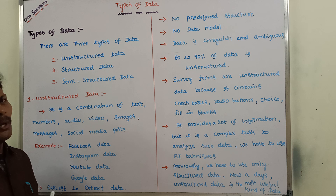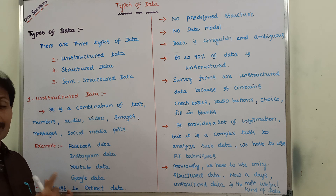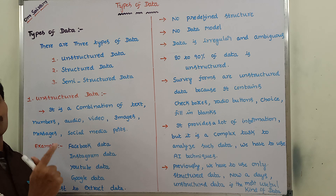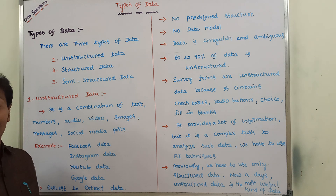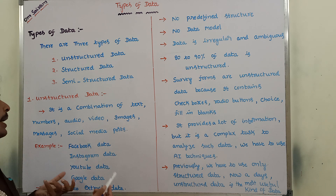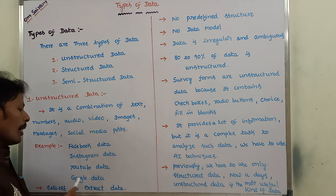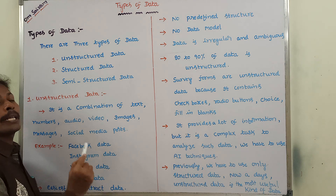We can see that in Facebook, some images are there, some video files are there, some audio files are there, some text data is there, some social media posts are there, some numbers are there. Because of that reason, we can say that Facebook data is unstructured data. In the same way, Instagram data, YouTube data, and Google data are also unstructured data.